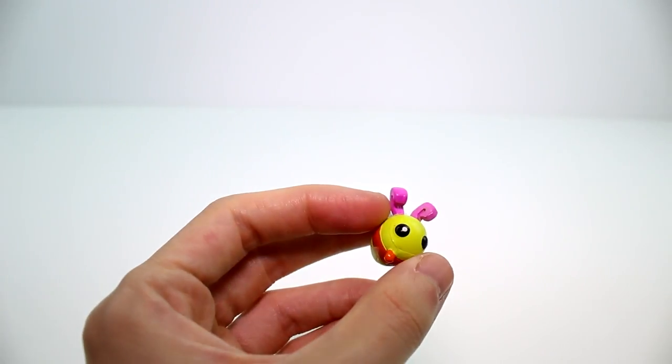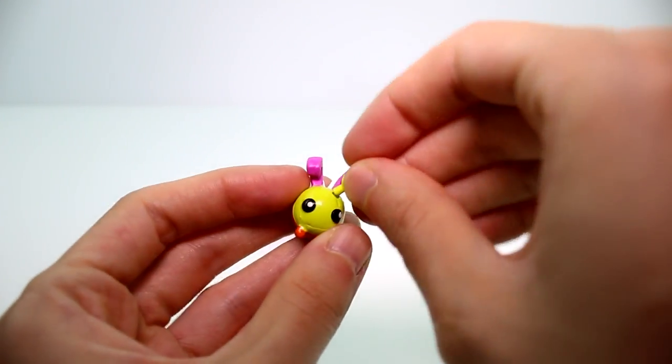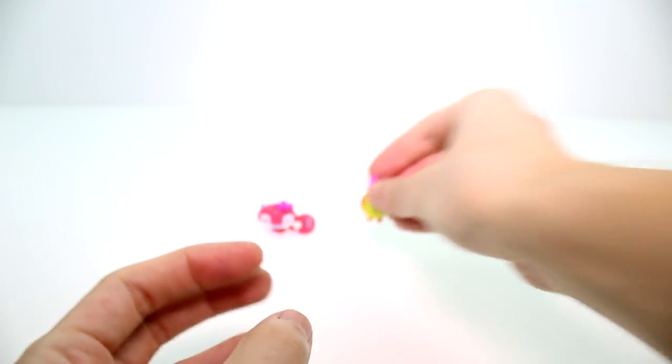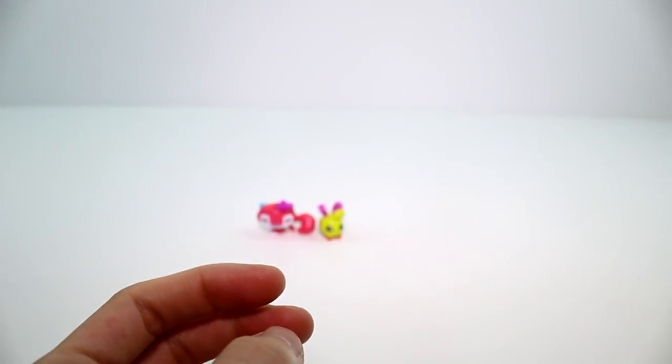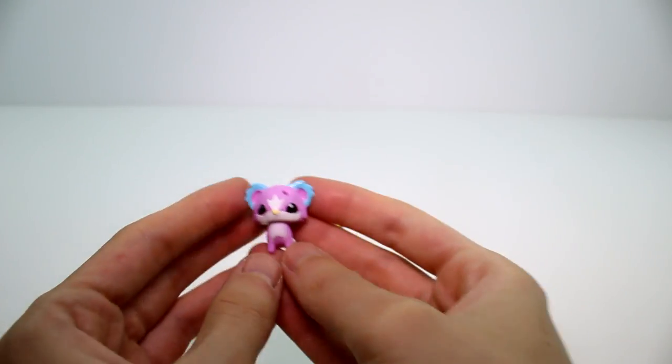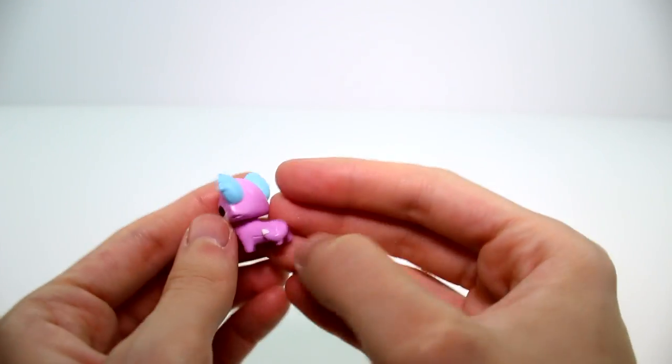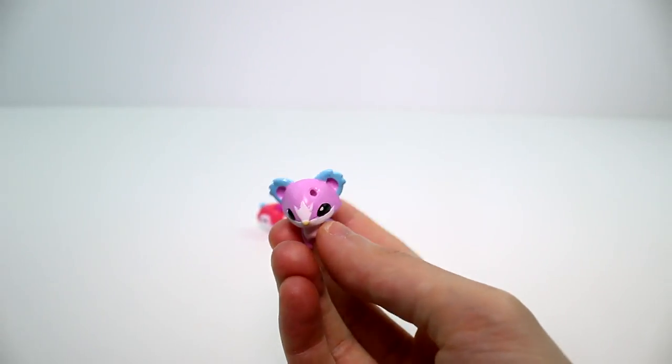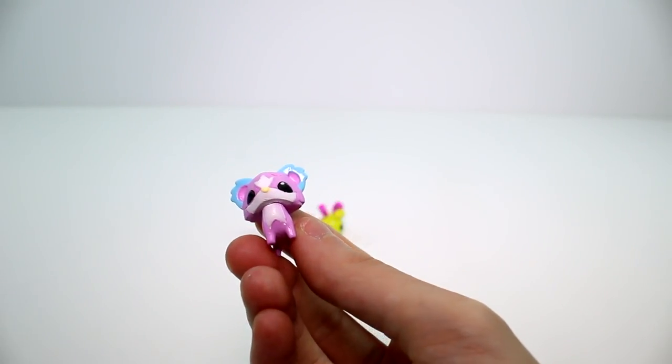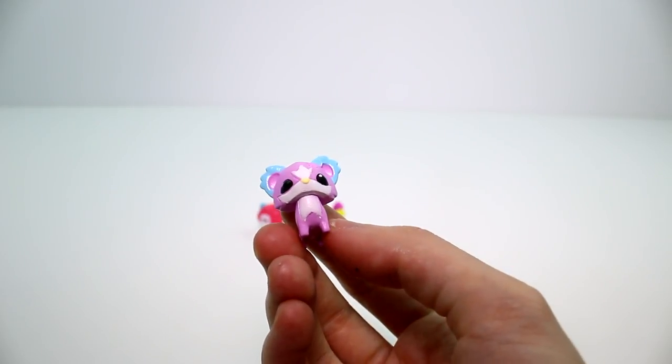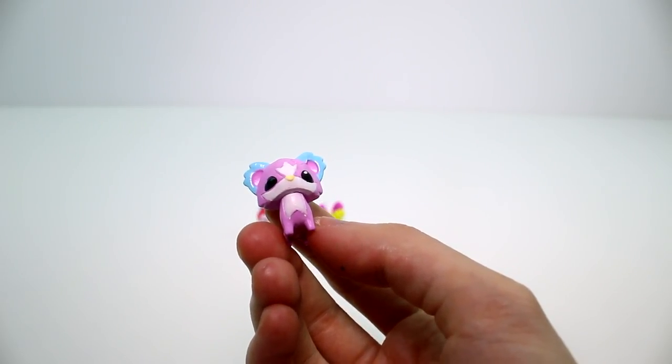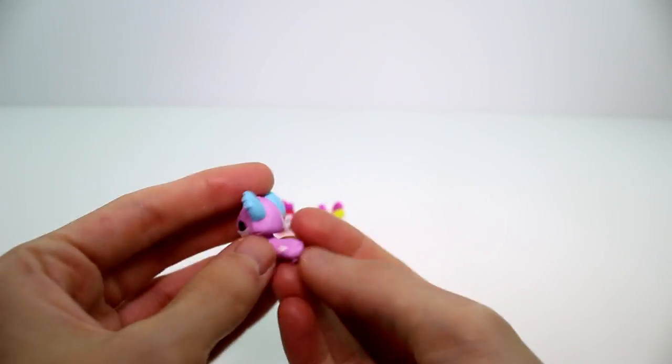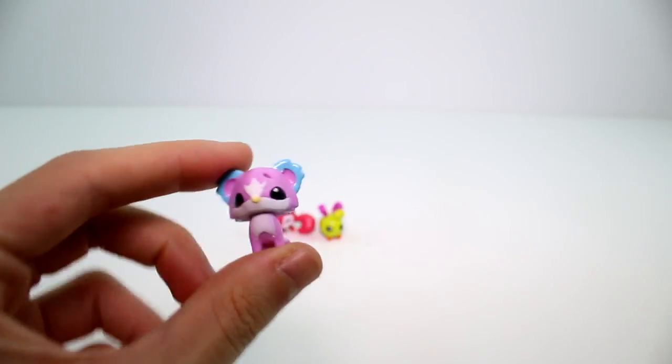And then let's see what headpiece we're gonna give her. Let's give her this thing, whatever this is, like a flame or something. That's fun. Let's see what else do we have. We have this little girl. Oh my gosh, she's so cute. I don't know what she is though. I was gonna say a fox, but those aren't fox ears.